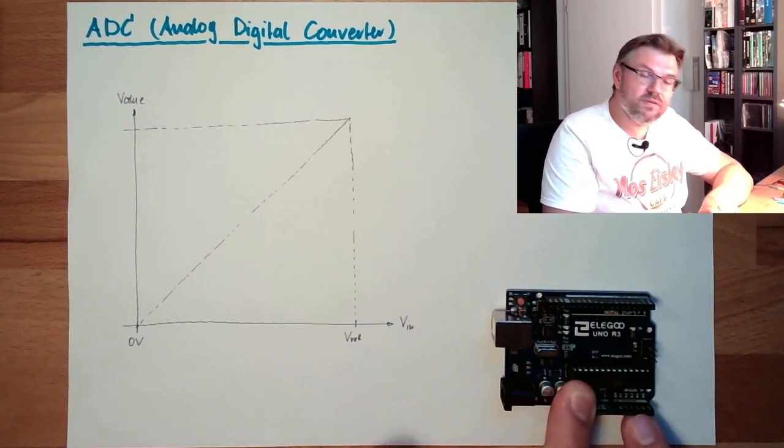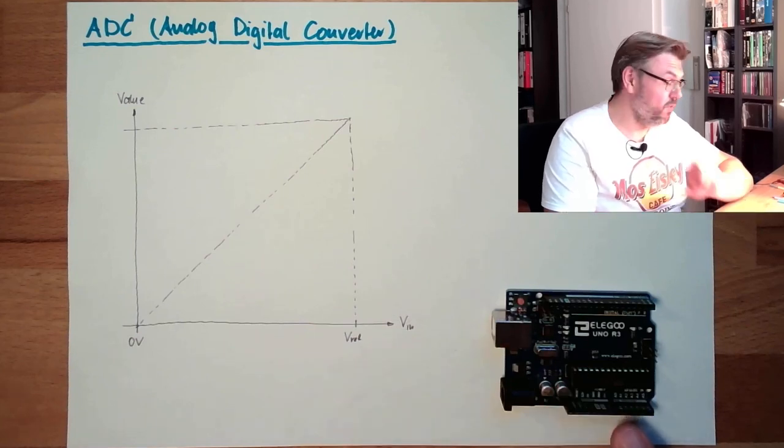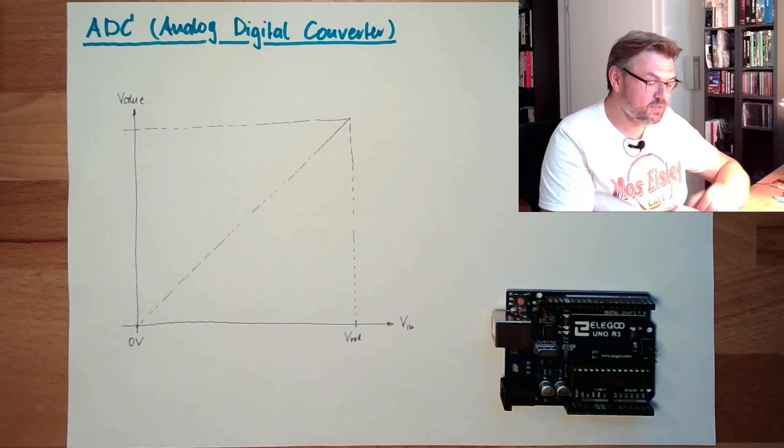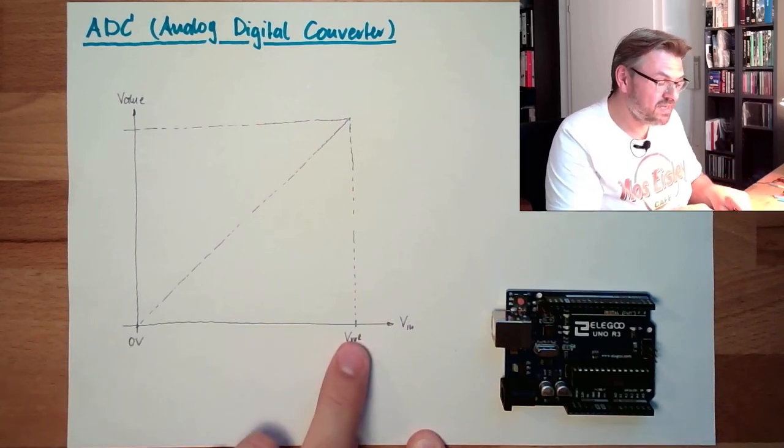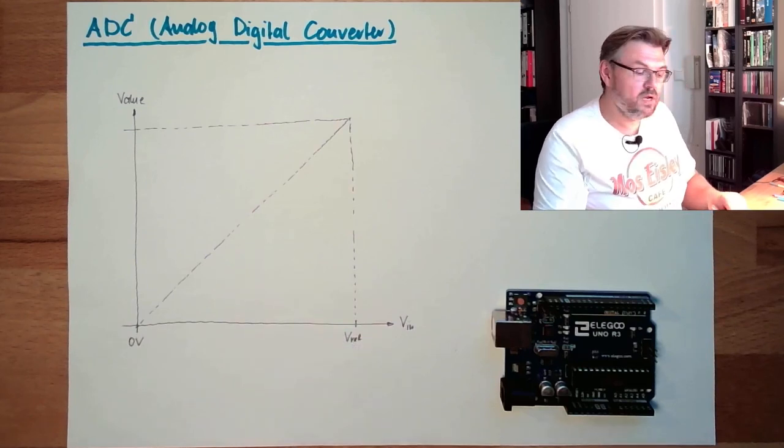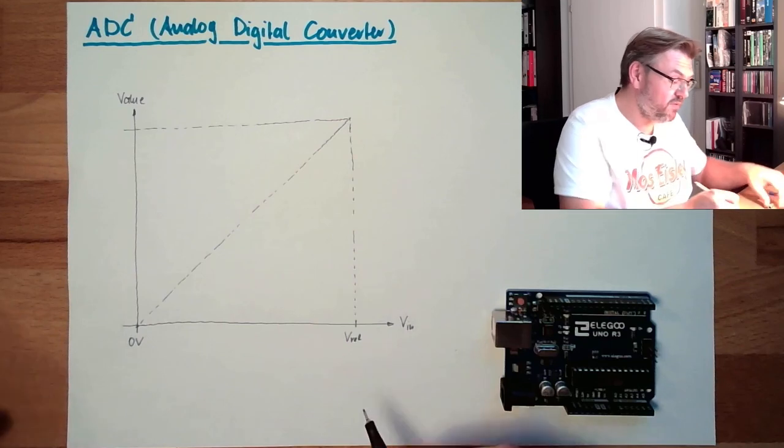Our Arduino does have a so-called 10-bit analog digital converter, whatever this means. So we have an input range between 0 volts and some reference voltage. The reference voltage is usually, default, it is 5 volts.